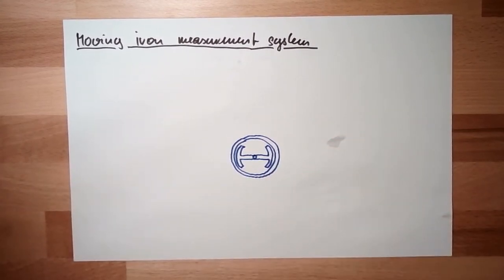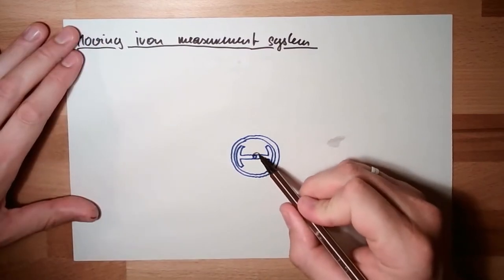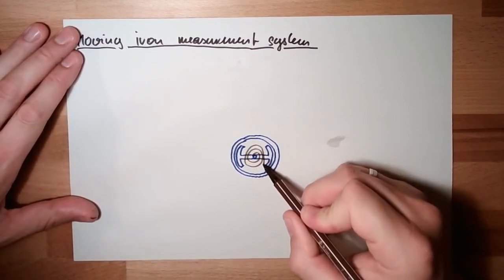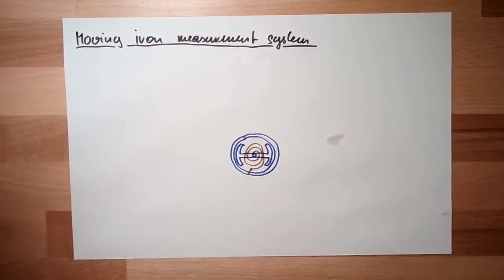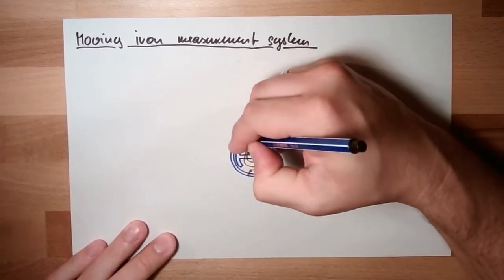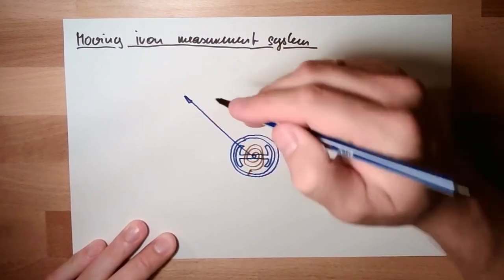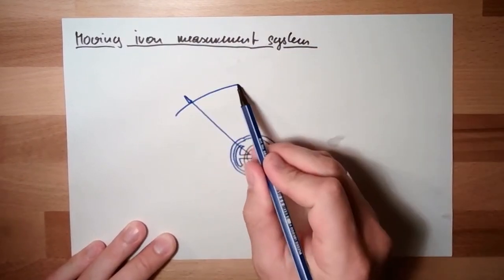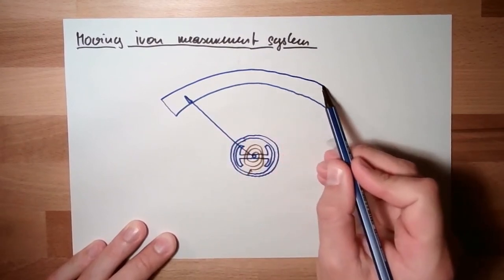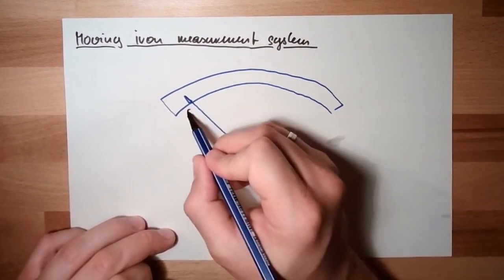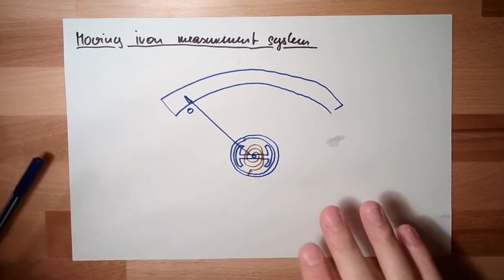At this inner iron piece, we again have a spring, so this is spring loaded. And this has a pointer which is pointing at a scale.